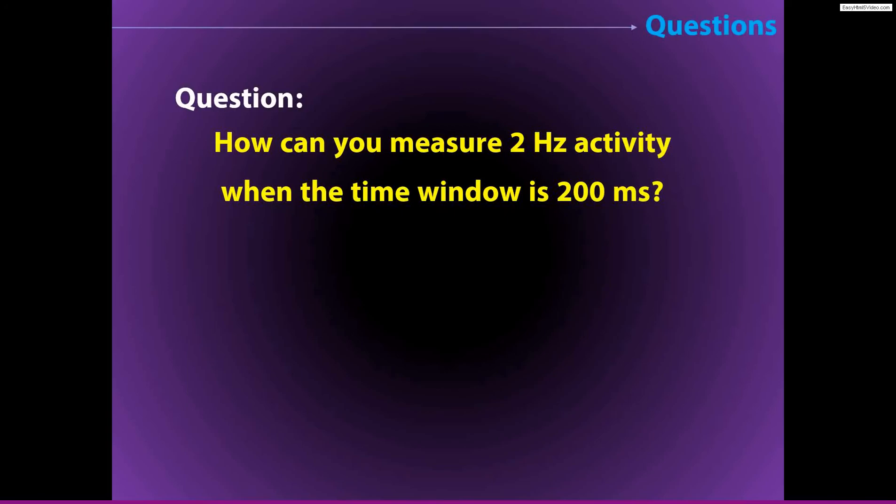So here's the question. How can you measure 2 Hz activity when the time window that you're averaging or looking at is 200 ms? And this is a very sensible question, and it's an understandable concern that people would have, because the reasoning is the idea behind asking this question is, well, 200 ms is only one cycle at 5 Hz.